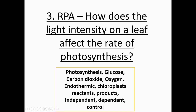The key words for today are photosynthesis, glucose, carbon dioxide and oxygen. Endothermic, meaning a reaction that requires energy. Chloroplasts, the part of the cell that does photosynthesis. Reactants and products, as it is a chemical reaction. And independent, dependent and control — these are all the types of variables that we need to be able to know the definitions of, but also know what they are and how to measure them for this investigation.